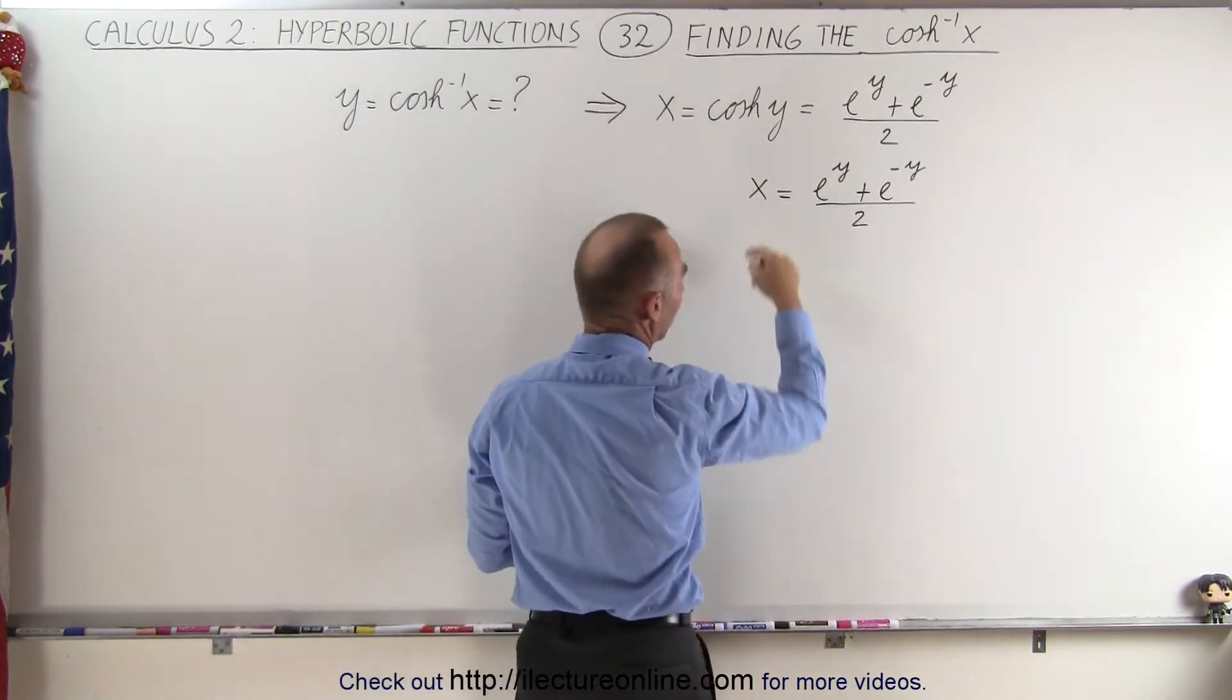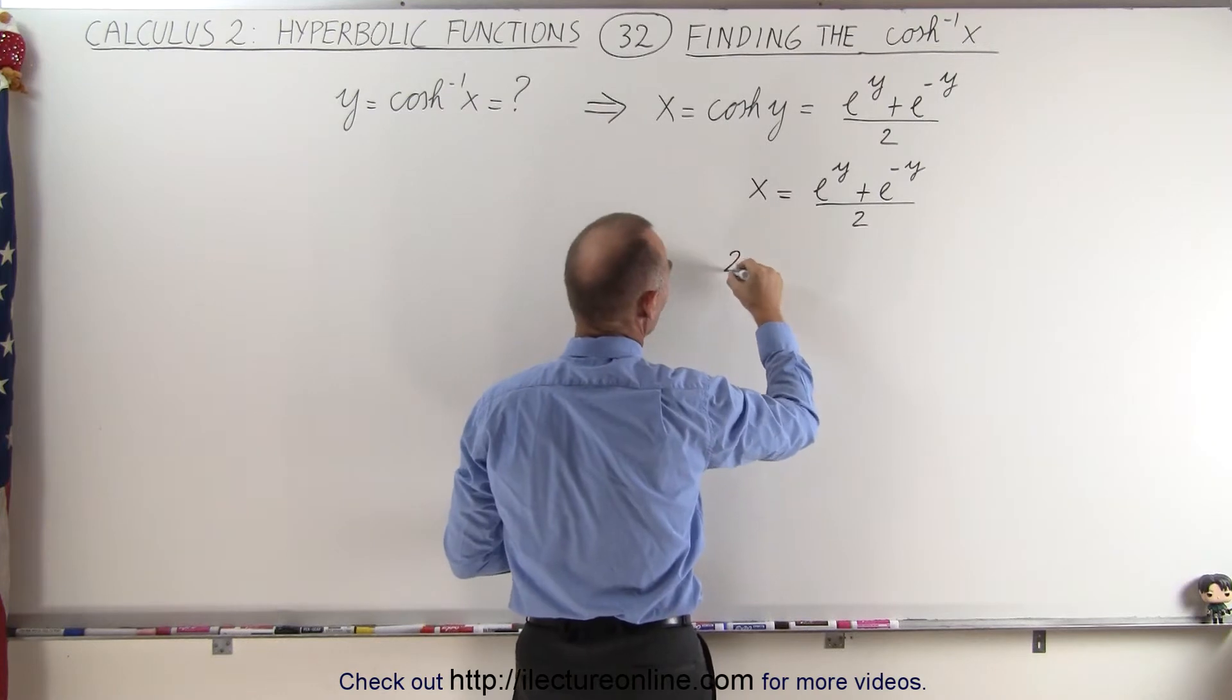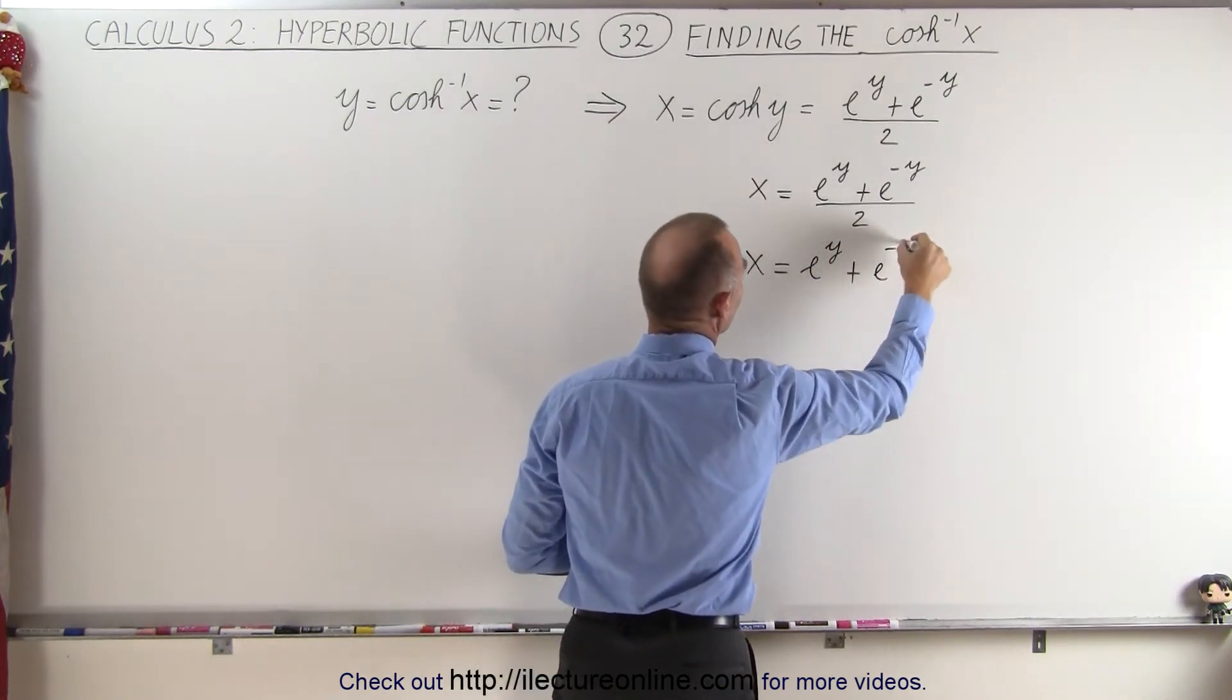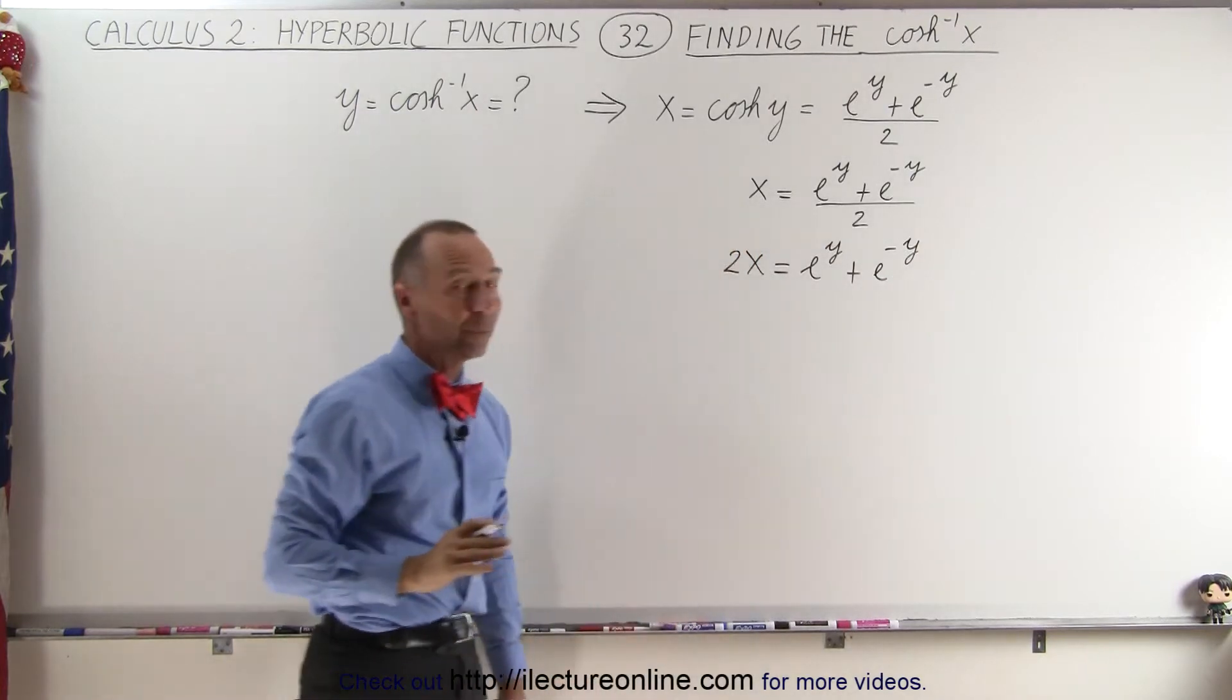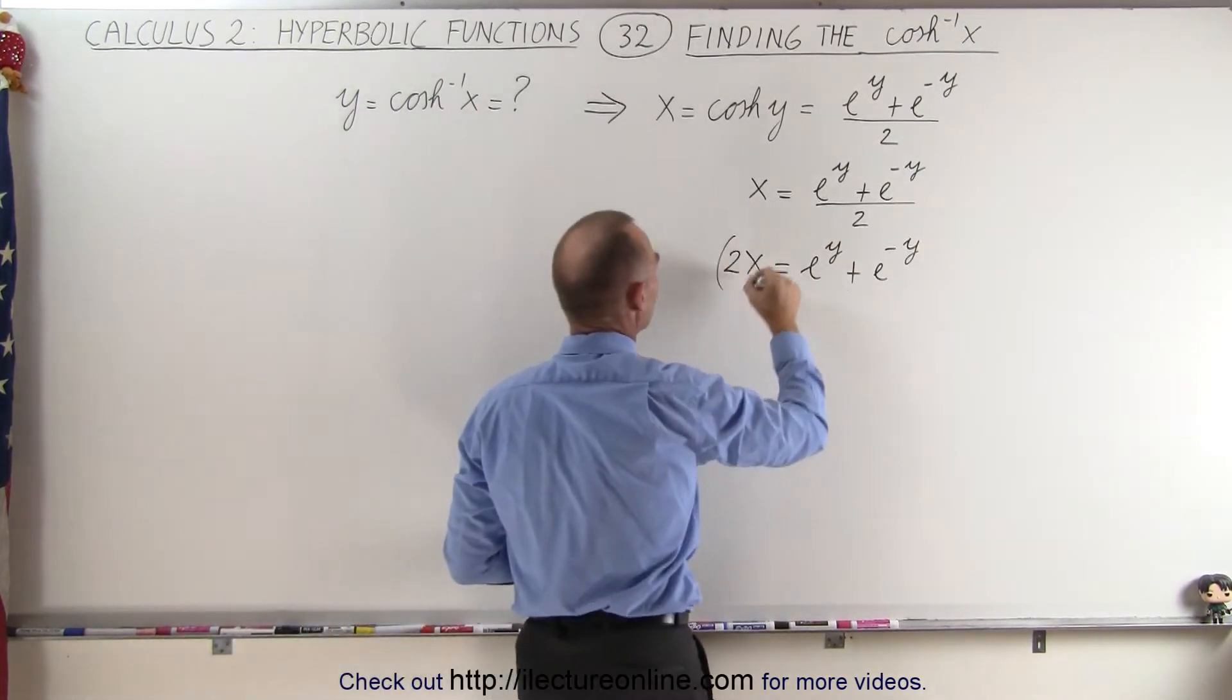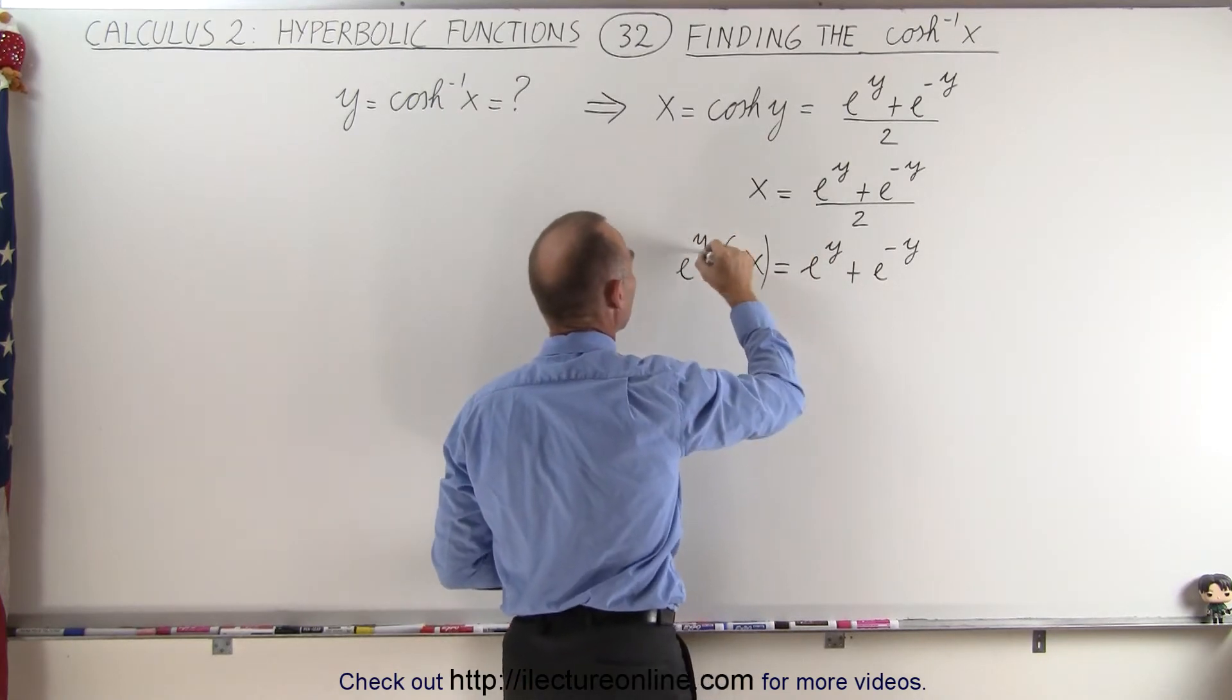So the first thing we want to do is multiply both sides by 2, end up with 2x equal e to the y plus e to the negative y, and then we're going to use that trick again, we're going to multiply both sides of the equation by e to the y.